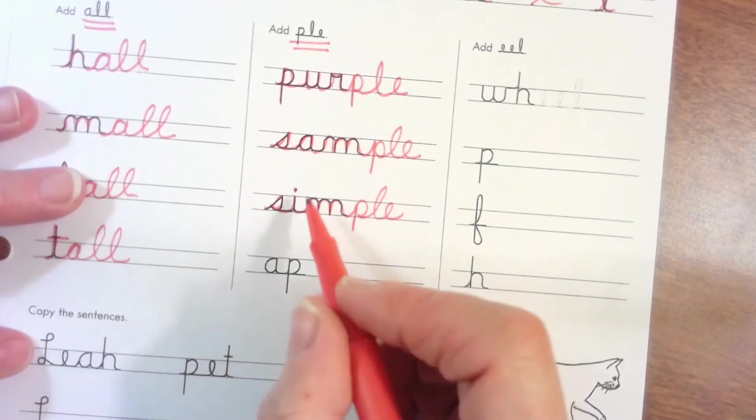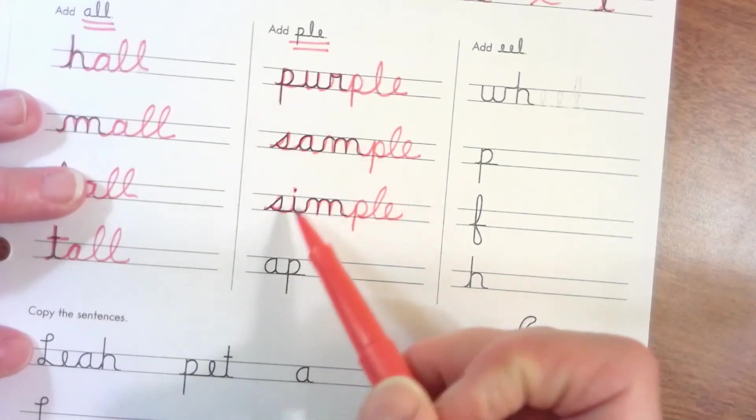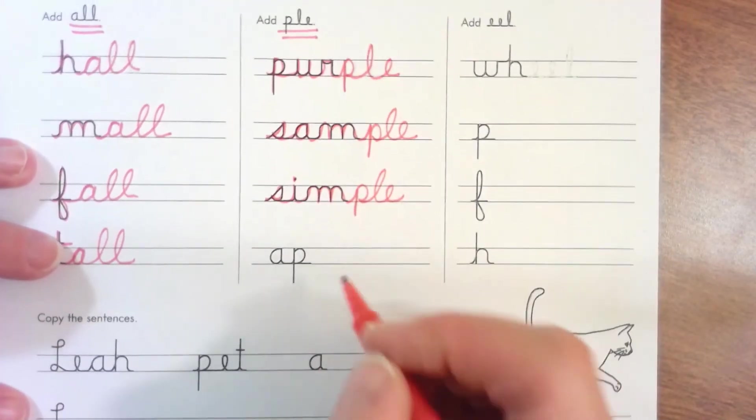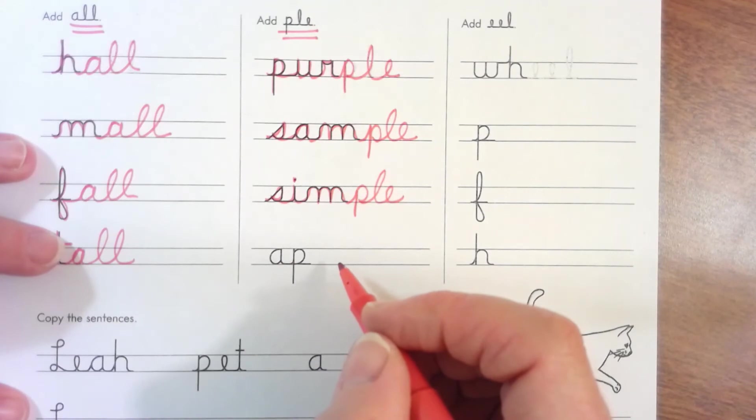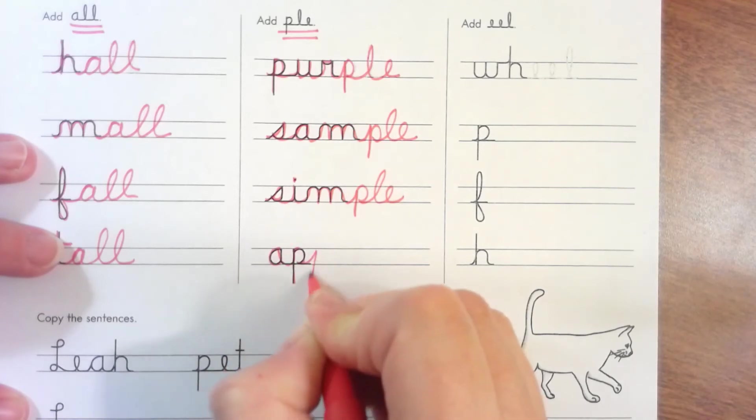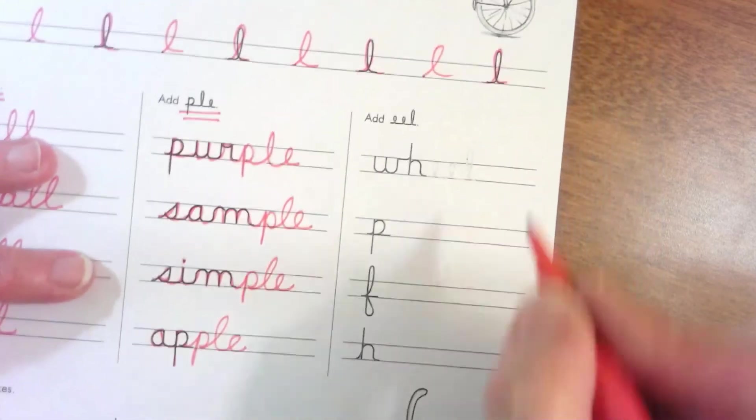So some of these letters we haven't gone over, so like the S, this type of thing. I understand if it, don't get frustrated, but just know that we will eventually learn that S. All right, here we go. Apple. Apple.